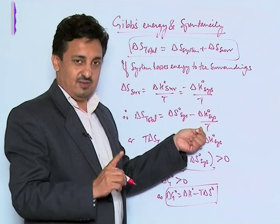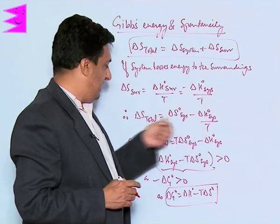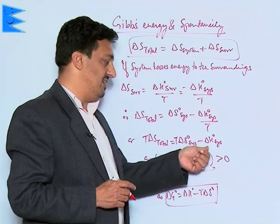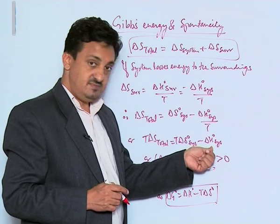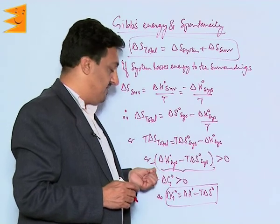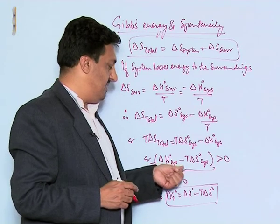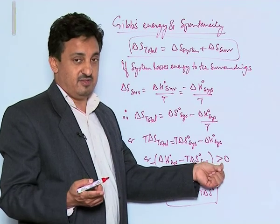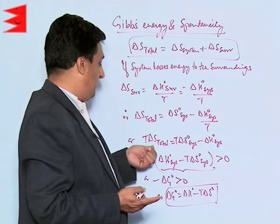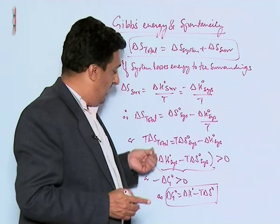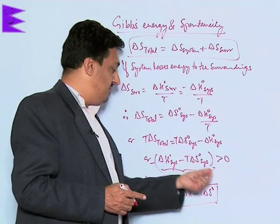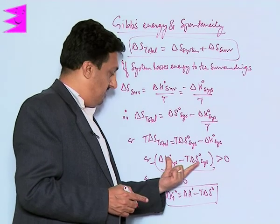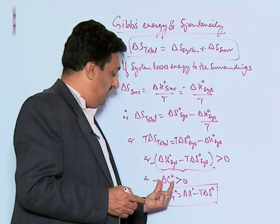Considering a spontaneous exothermic process, when both sides are multiplied by T, we get: T times delta S total equals T times delta S system minus delta H system. Bringing the negative sign out, we get delta H system minus T delta S system is greater than or equal to zero. For a spontaneous process, the total entropy change must be increasing, so this whole term must be positive. This combined term is expressed as a single quantity called delta G.